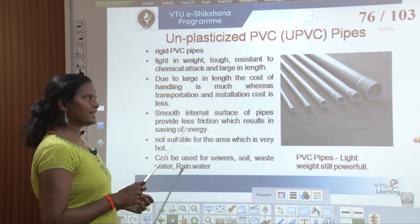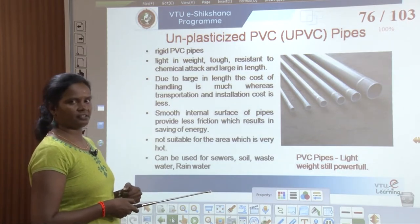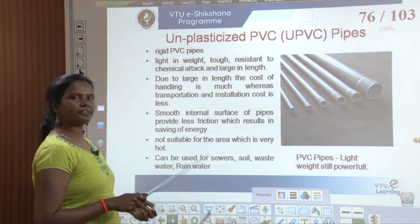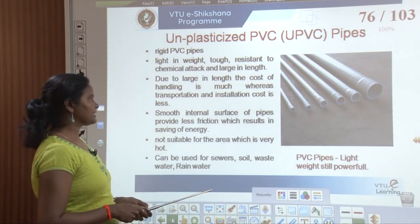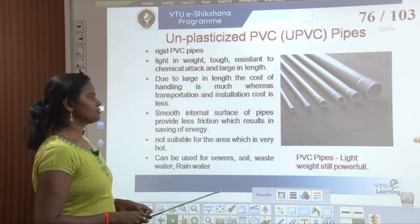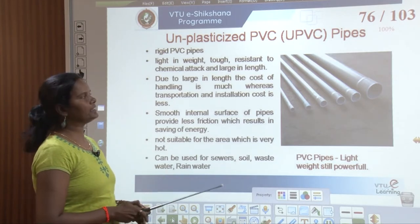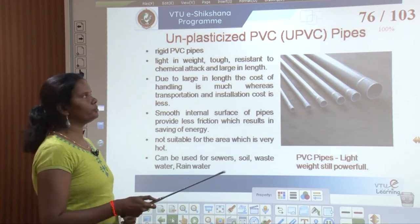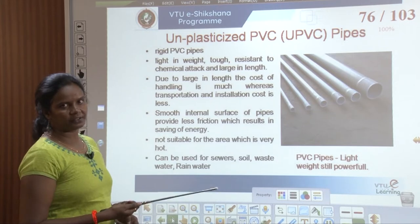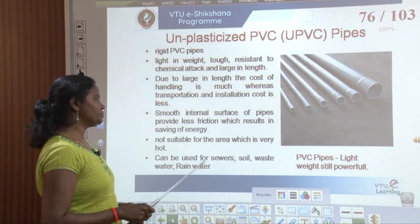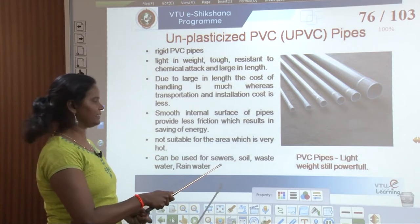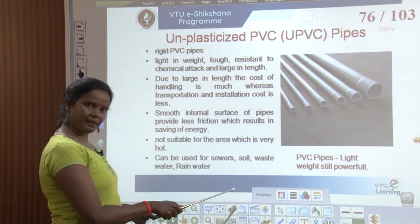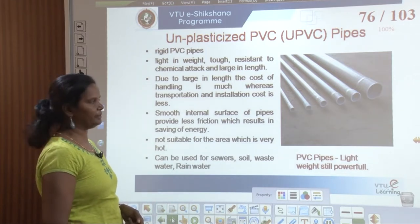UPVC pipes have a very smooth internal surface, which results in less friction and saves energy. They are not suitable for hot water because the chemical composition of PVC pipes can react with hot water. They can be used for sewers, main sewers, soil pipes, waste pipes, and rainwater.